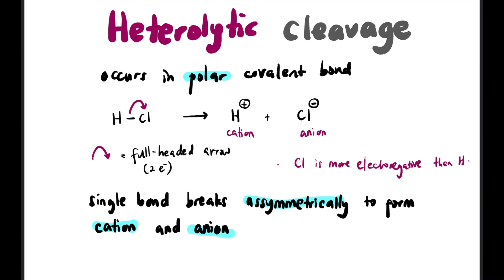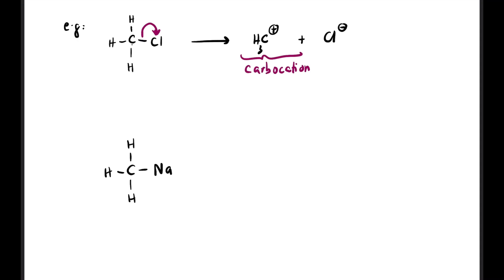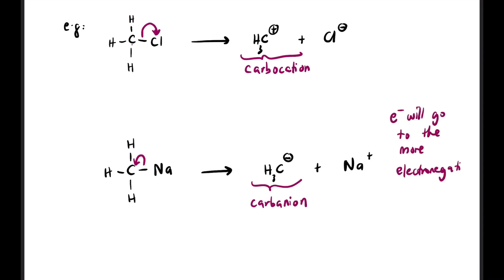Both electrons go to Cl because Cl is more electronegative than hydrogen. Next, for a C–Cl bond, Cl is more electronegative than carbon, so both electrons go to Cl, producing CH3+ and Cl−. Because carbon has a positive charge, it is called a carbocation. For a C–Na bond, both electrons go to C because C is more electronegative than Na, producing CH3− (carbanion) and Na+. Electrons always go to the more electronegative atom.